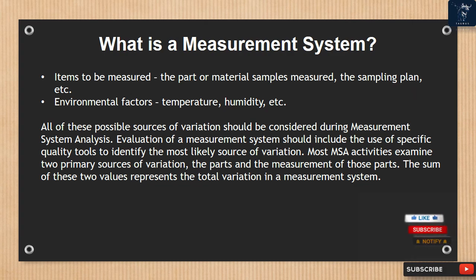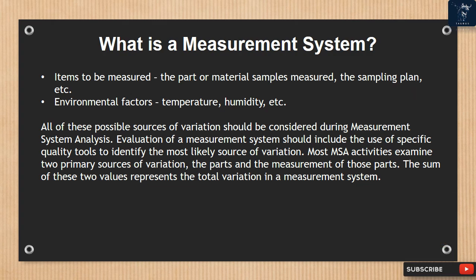Evaluation of a measurement system should include the use of specific quality tools to identify the most likely source of variation. Most MSA activities examine two primary sources of variation: the parts, and the measurement of those parts. The sum of these two values represents the total variation in a measurement system.